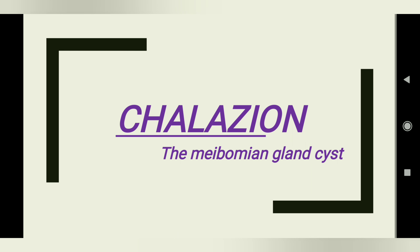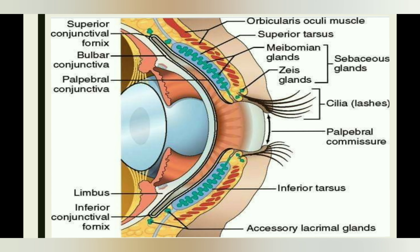Chalazion — the meibomian gland cyst. What is a meibomian gland? It is nothing but a sebaceous gland, the largest sebaceous gland present in the eyelid.